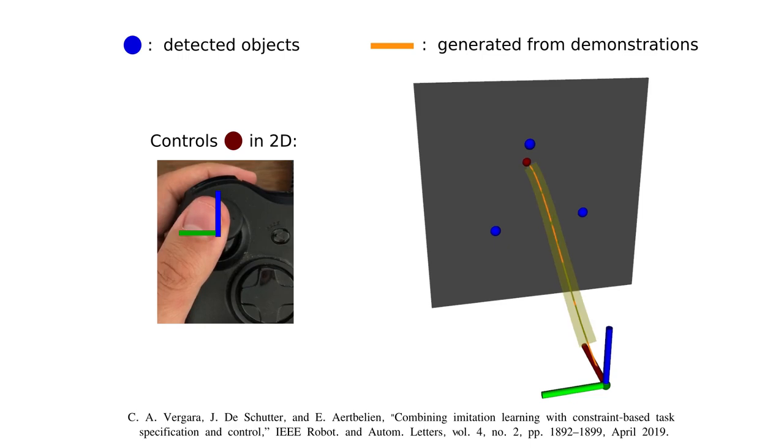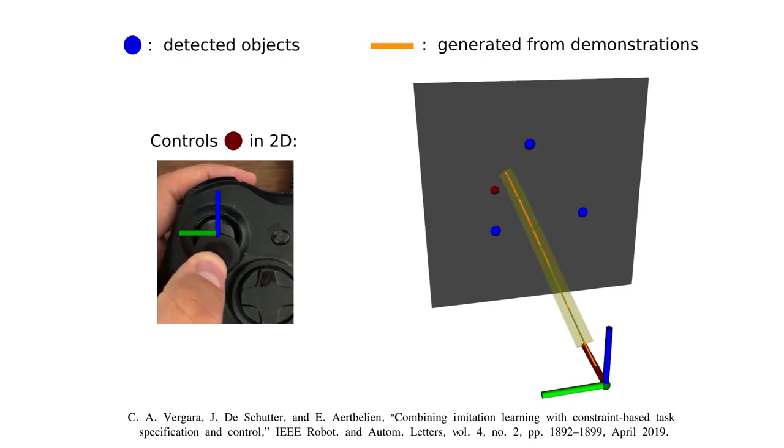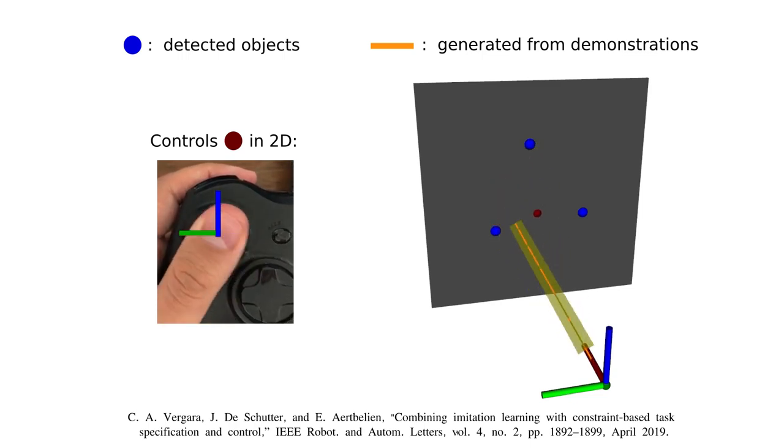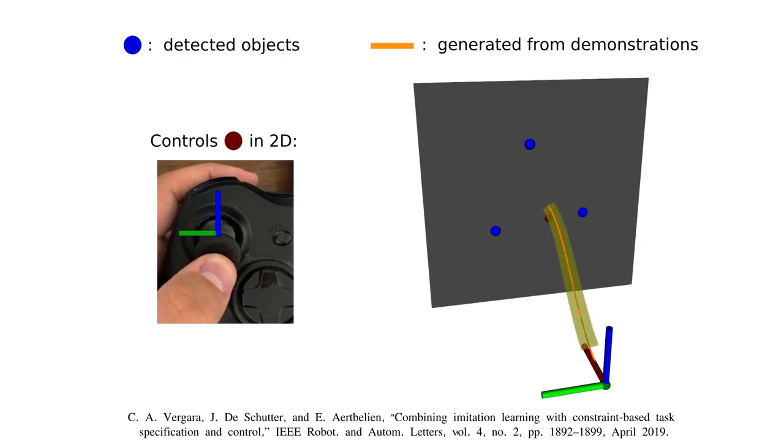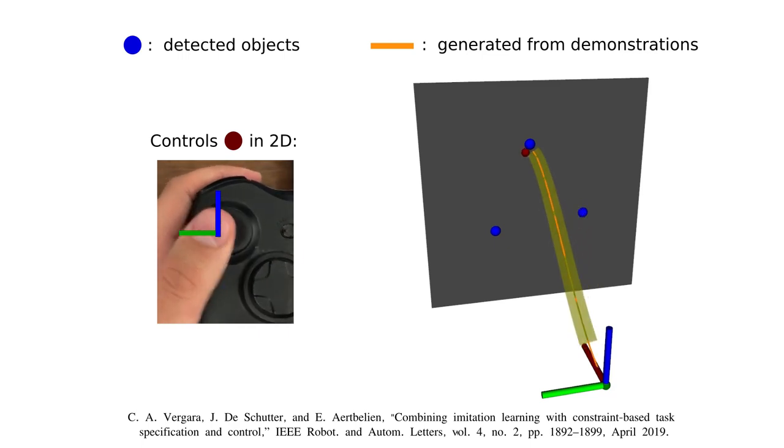In this example, we have three objects which are detected by a commercial vision system when using it in a physical setup. Our assistive strategy infers the intention of the operator and attracts the endpoint of the tube towards the inferred target object.